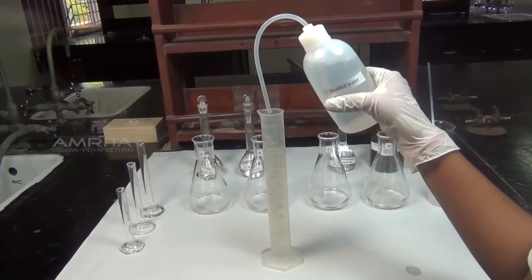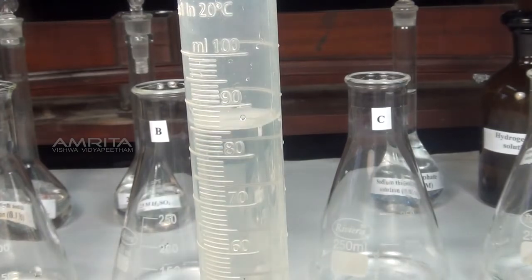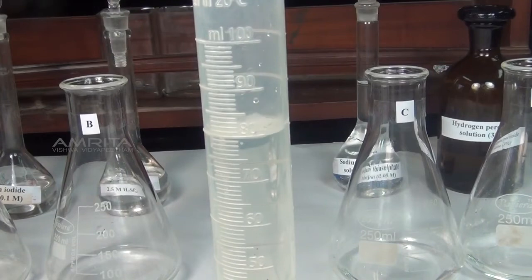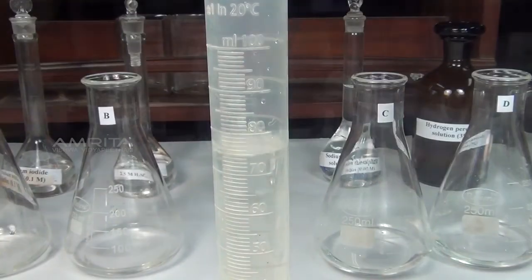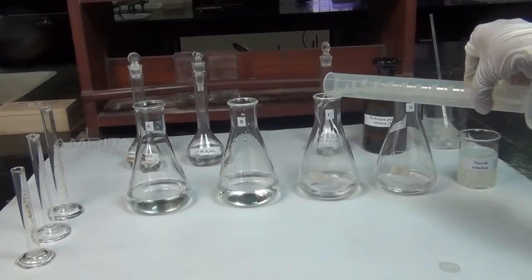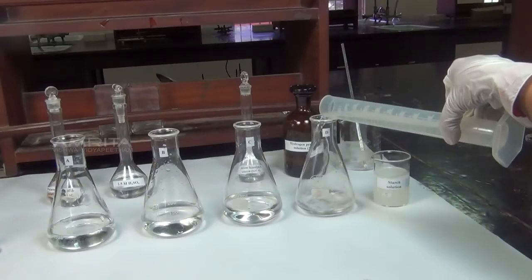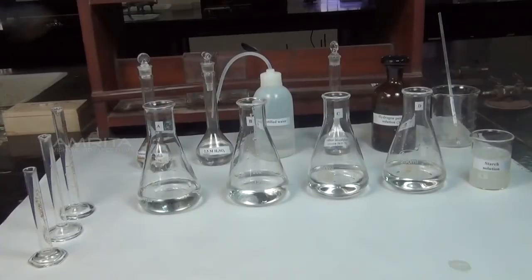Now, using a measuring cylinder, add 85 ml of distilled water to flask A, 80 ml to flask B, 75 ml to flask C, and 70 ml to flask D to make the volume of solution 100 ml in each flask.